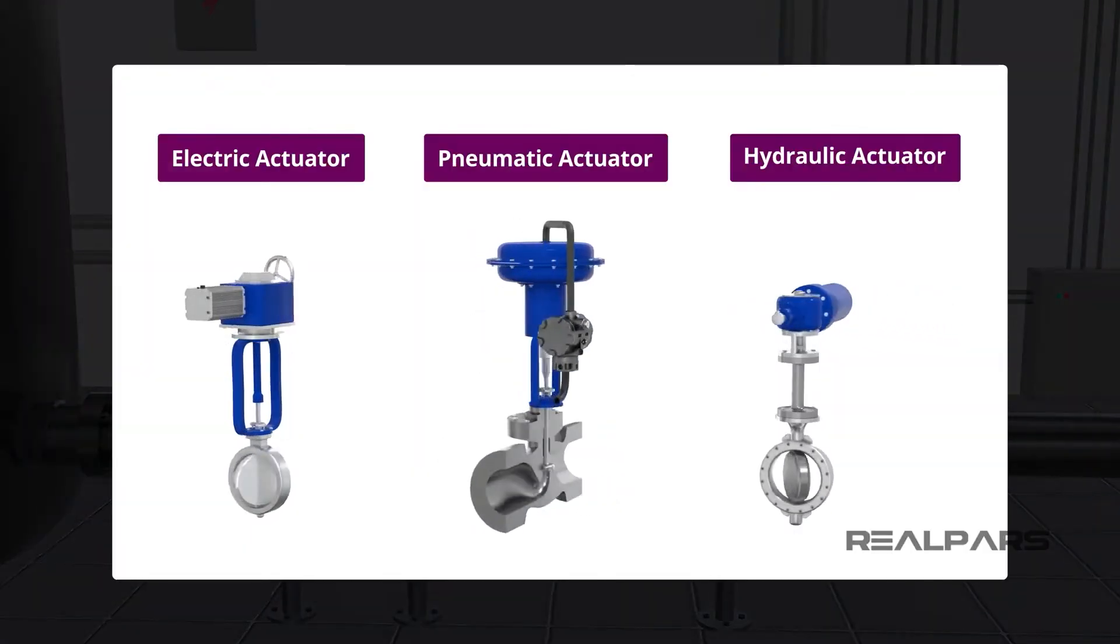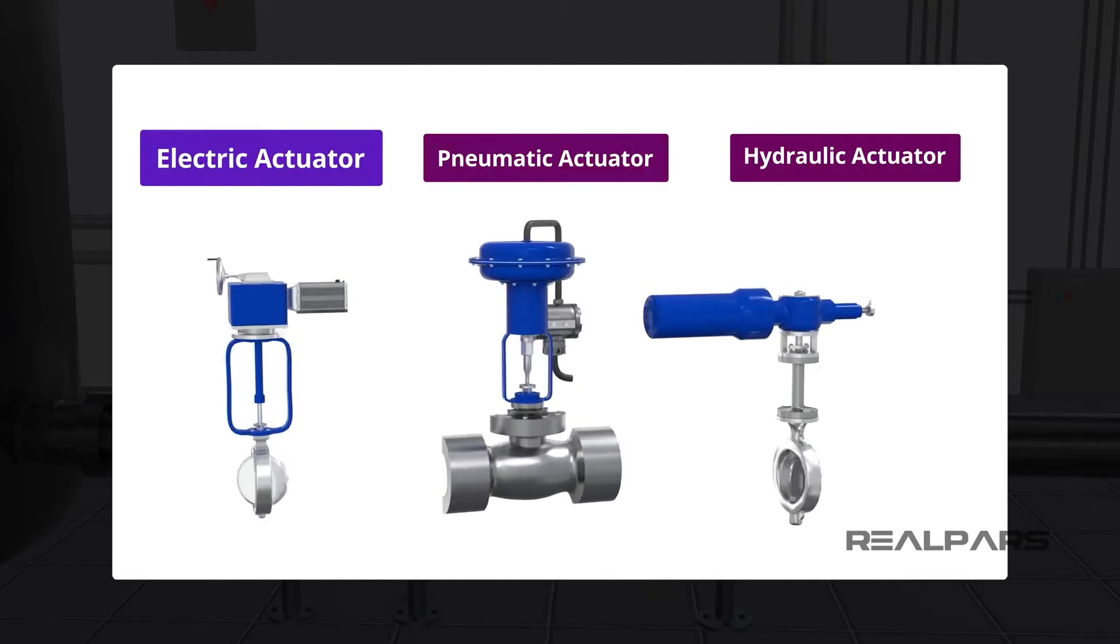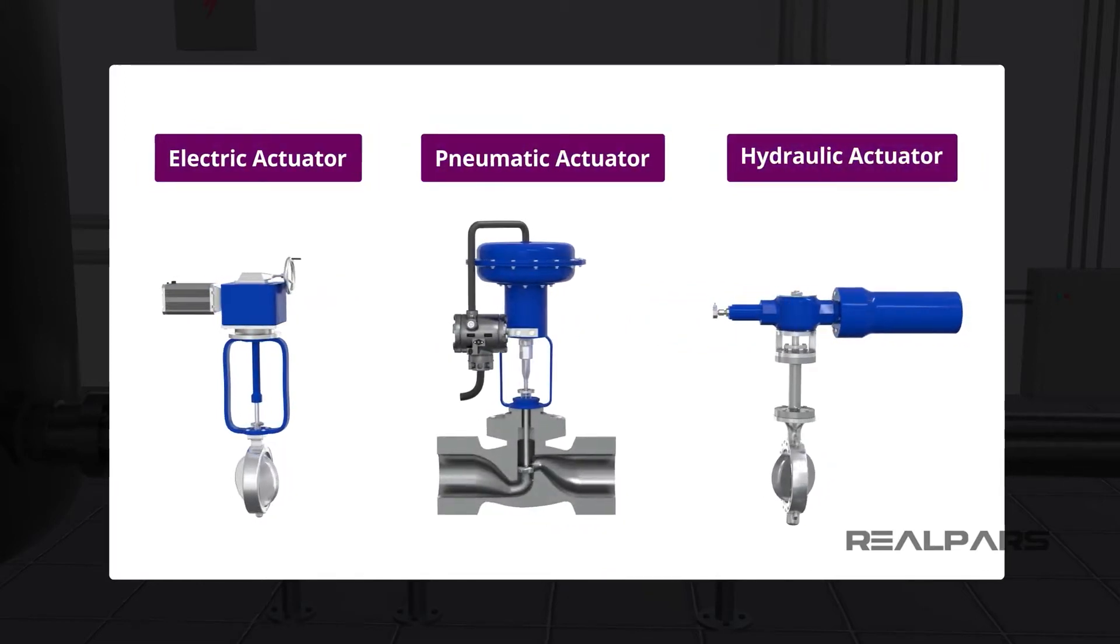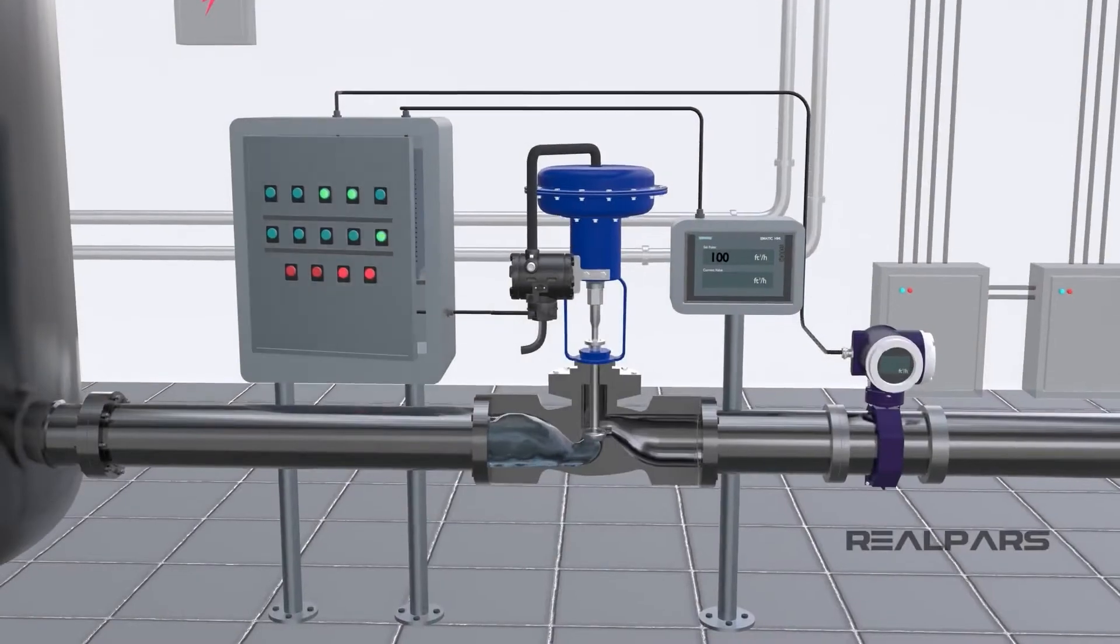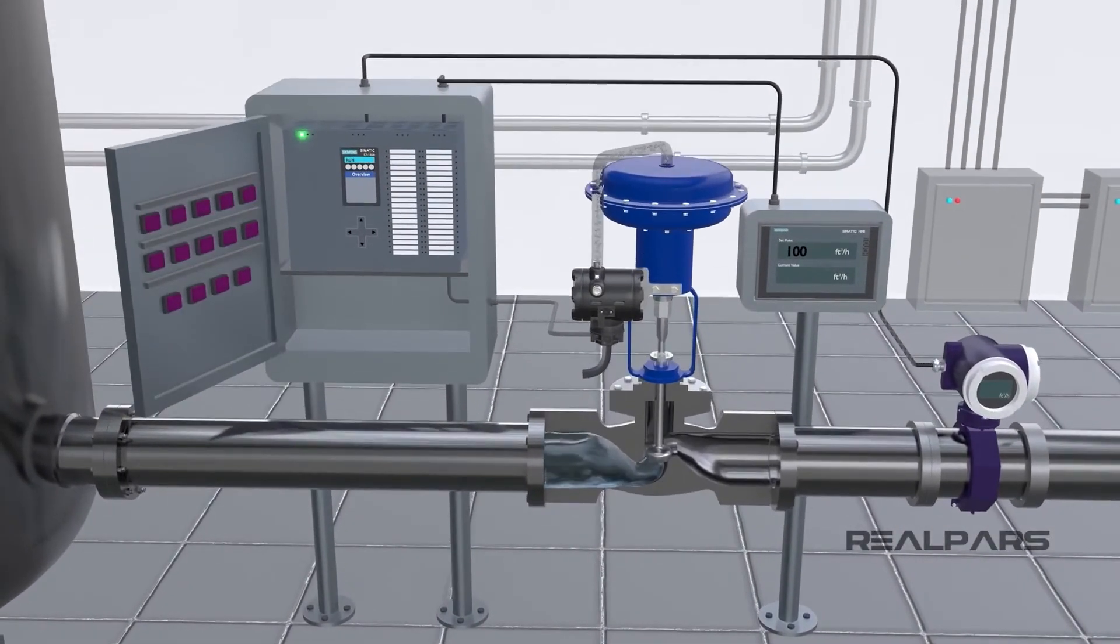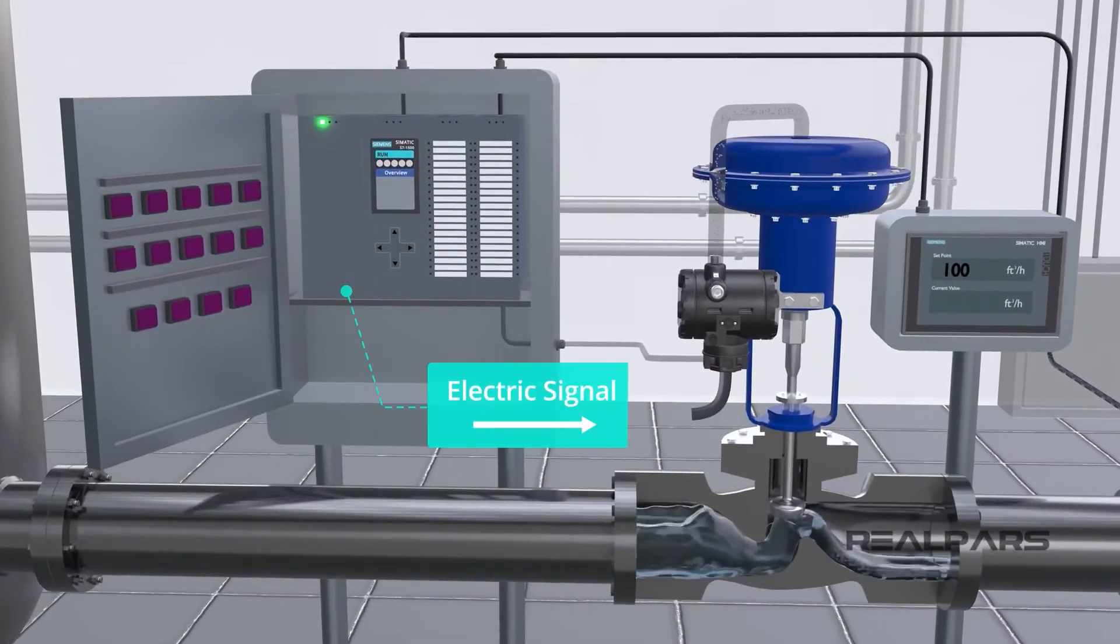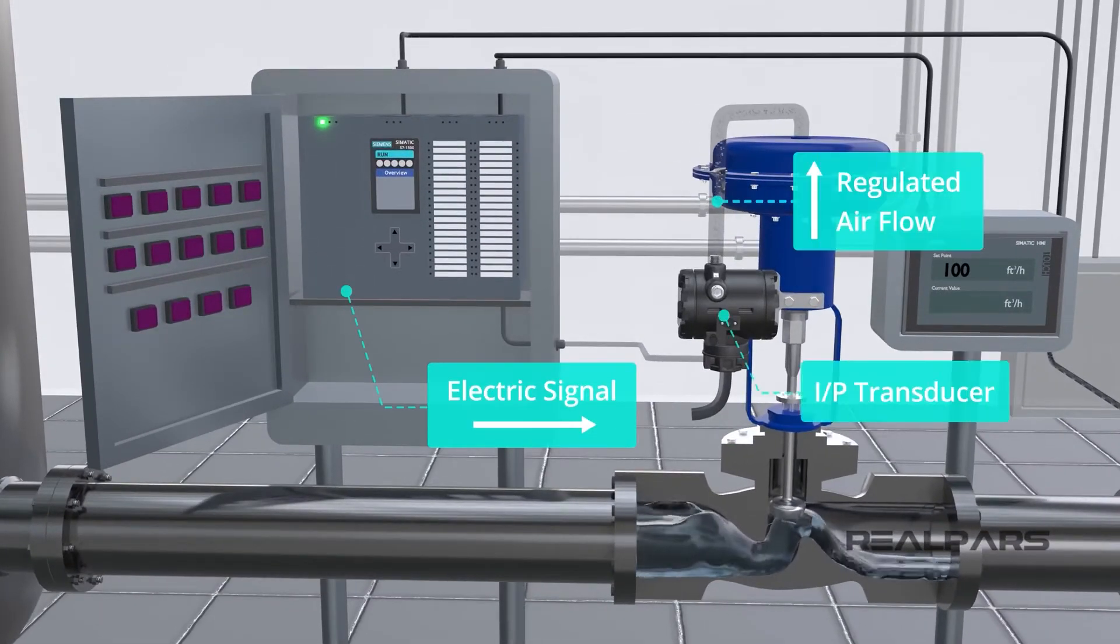A control valve can be operated electrically, pneumatically, or hydraulically. A control valve receives a signal from a controller such as a PLC in order for it to move resulting in a change in flow. Because the PLC signal is electrical, the control valve may require a device to convert that electrical signal so that it can operate.